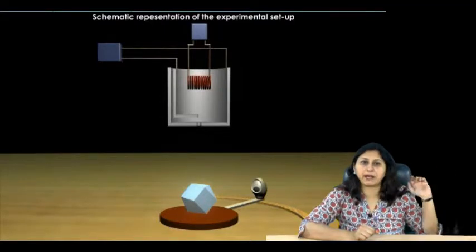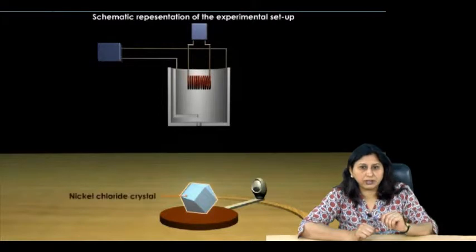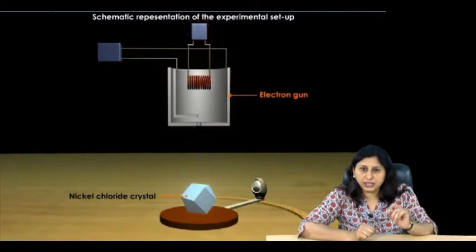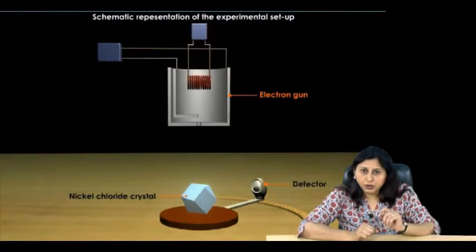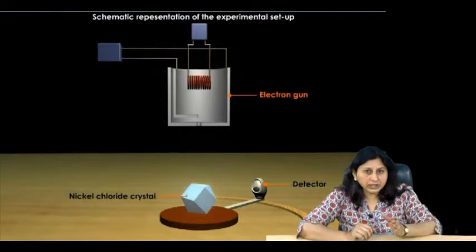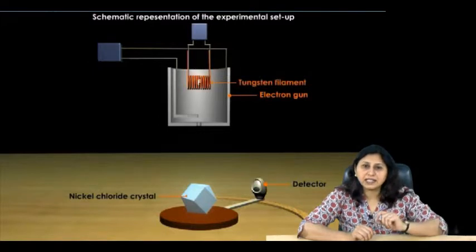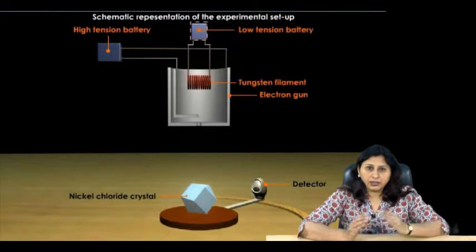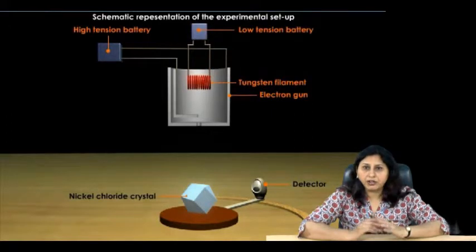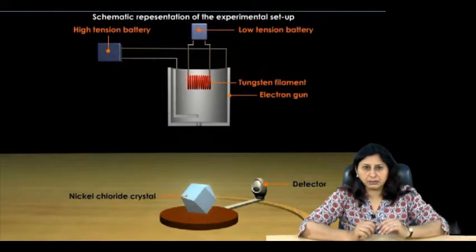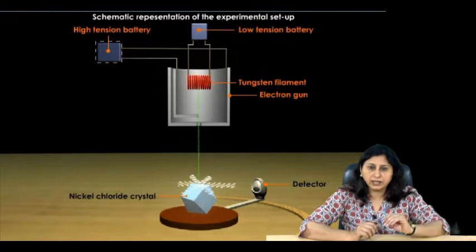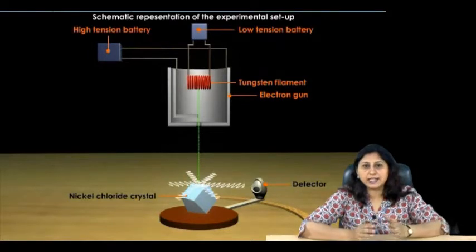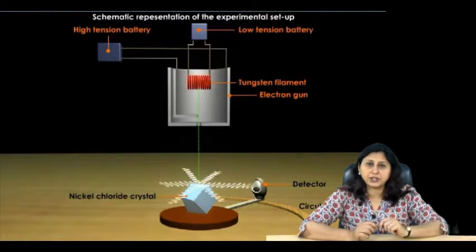This is the block diagram of the experimental setup used by Davison and Germer. It consisted of a nickel chloride crystal, the target, an electron gun G and a detector. The electron gun produced a beam of electrons. The electron gun used by them consisted of a tungsten filament F and high and low tension batteries. The low tension battery was used to heat the filament. The red hot filament produced an electron beam. A high tension battery was provided to accelerate the electron beam. The detector moved on a graduated circular scale. A sensitive galvanometer was also connected to the detector.